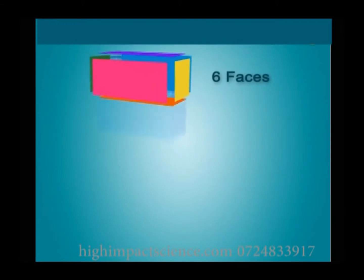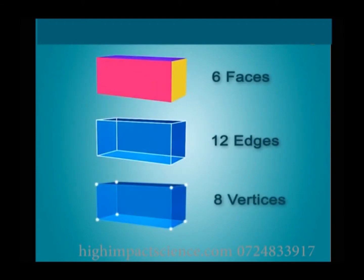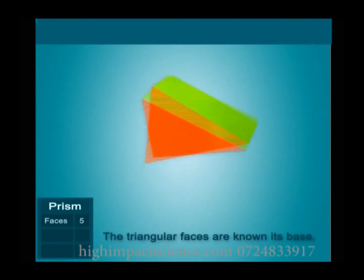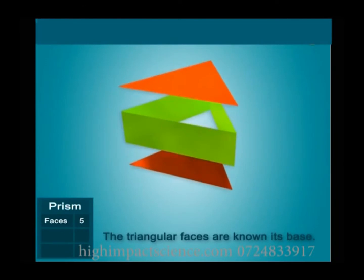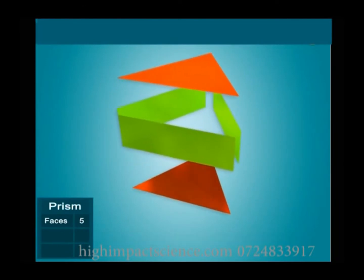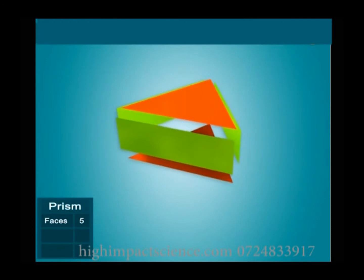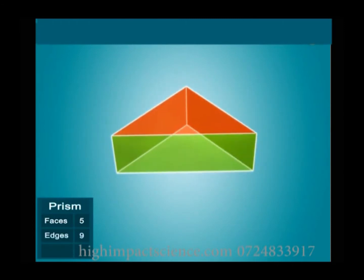A cuboid has 6 faces, 12 edges, and 8 vertices as well. A triangular prism has 5 faces: a top and a bottom triangle, and 3 rectangular faces. It has 9 edges and 6 vertices.